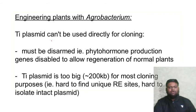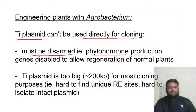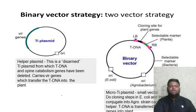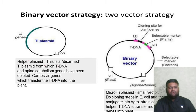To engineer plants with Agrobacterium, the Ti plasmid cannot be used directly for cloning — it must be disarmed. The phytohormone production genes are disabled to allow regeneration of normal plants. The Ti plasmid is too large for most cloning purposes; it is hard to find unique restriction sites and hard to isolate the intact plasmid. A binary vector strategy is used with a helper plasmid: a disarmed Ti plasmid from which the T-DNA and opine catabolism genes have been deleted, retaining only the vir genes that transfer T-DNA into the plant.